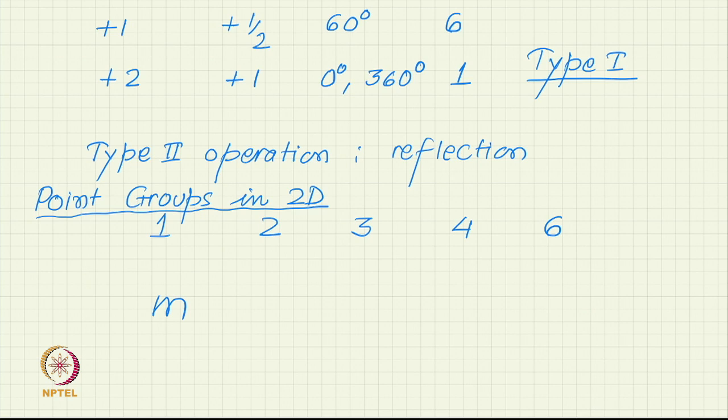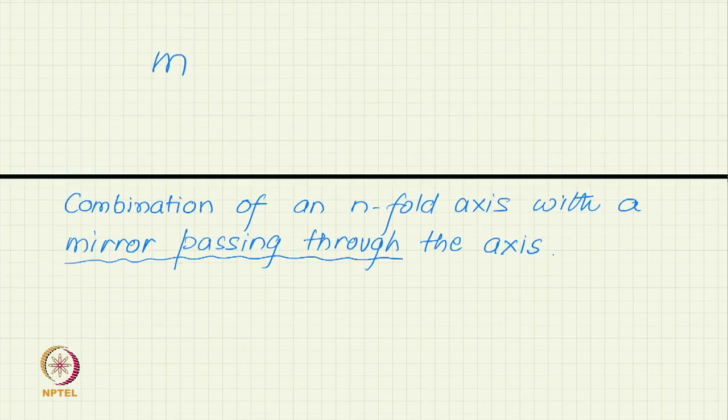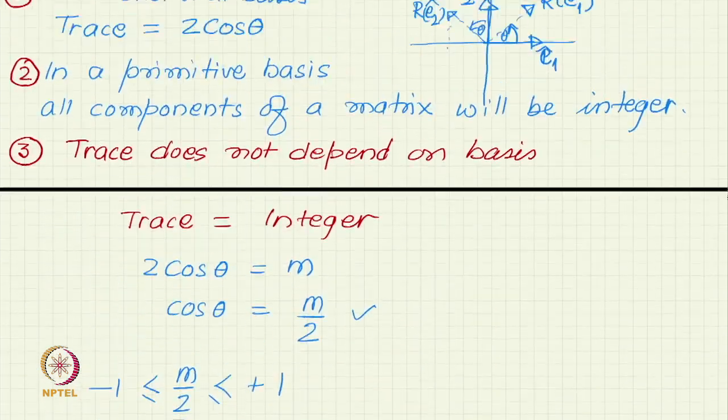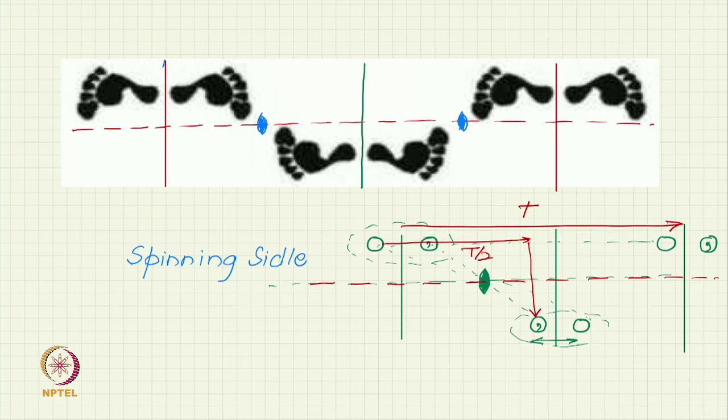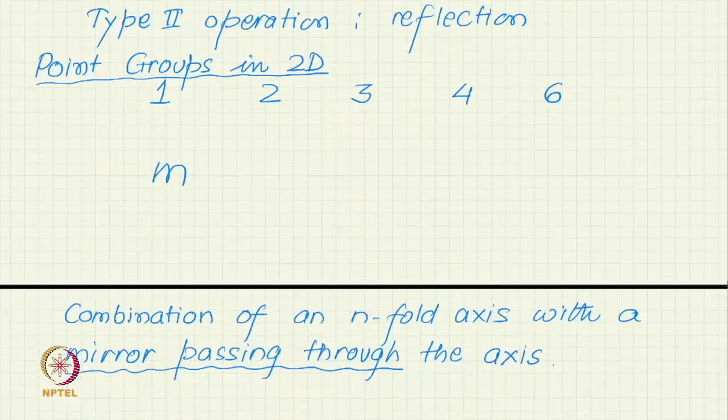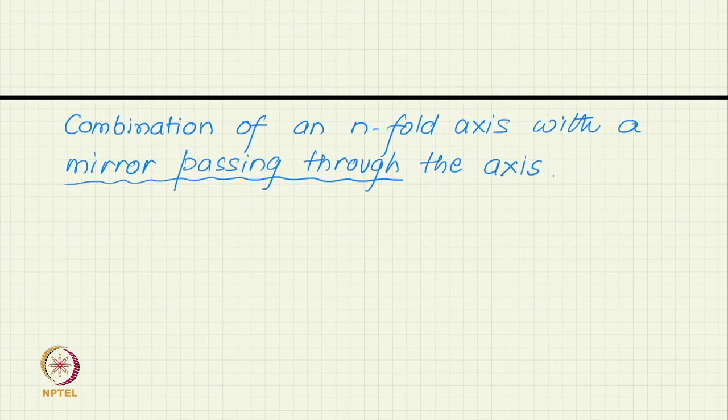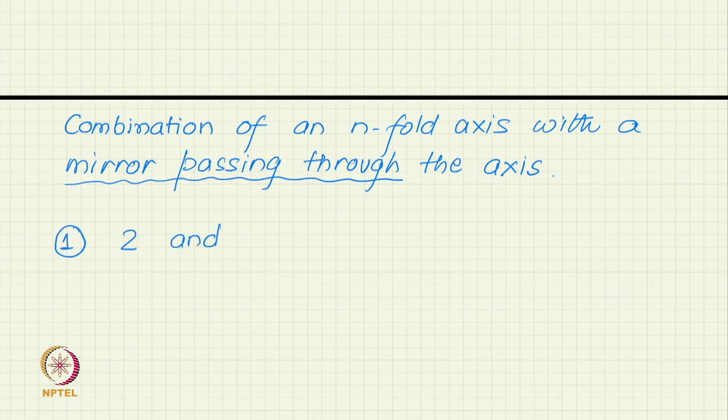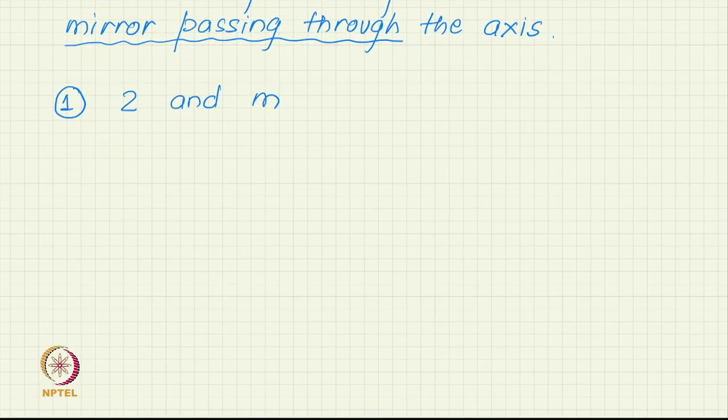In fact, m itself can be considered as combination of 1 and m. But what will be combination of 2 and m? We are saying mirror passing through the axis, that is not required for space group. We have already seen in our combination that we let the mirror and the 2 fold axis be separated, but then this generated a glide line and it generated a space group. We want to generate currently a point group. Our focus is on point group. We want one point to be left fixed. If we want one point to be left fixed, the mirror and the rotation axis should pass through the same point. Otherwise, no point will be left fixed.